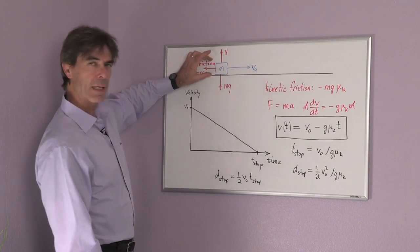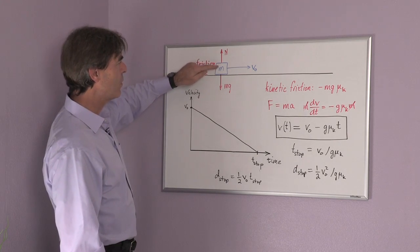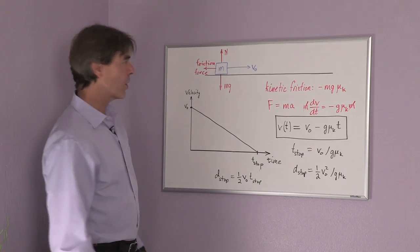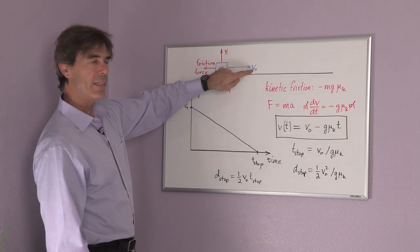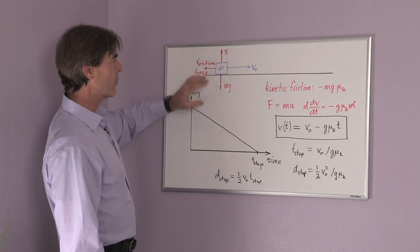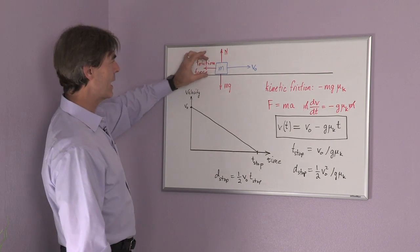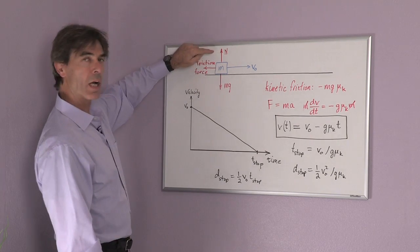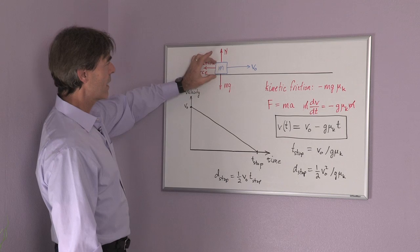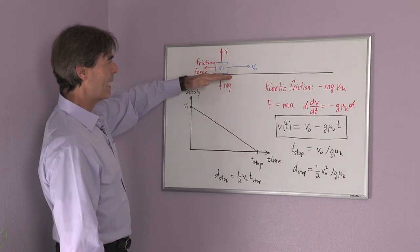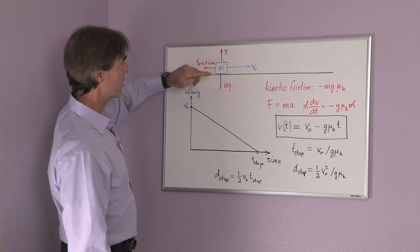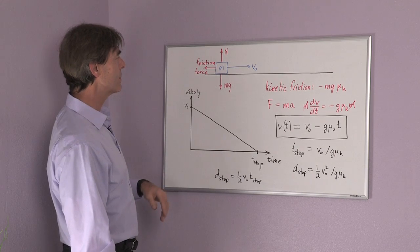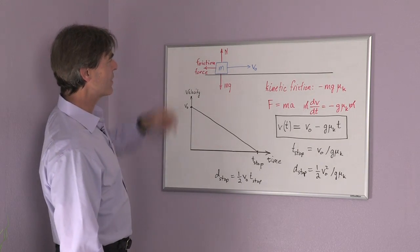The situation we're describing is the case of something with a mass m moving in this drawing to the right with a velocity v0. The forces acting on it are, on the one hand, gravity trying to push it down. There's a normal equal but opposite force of the pavement or the ground pushing up against the mass m, and then there's the frictional force.